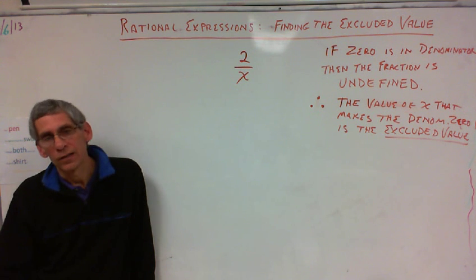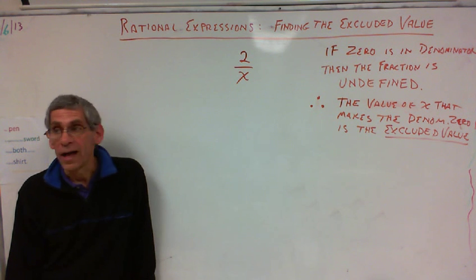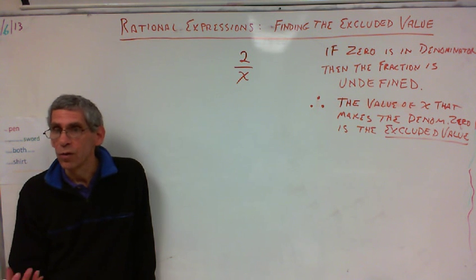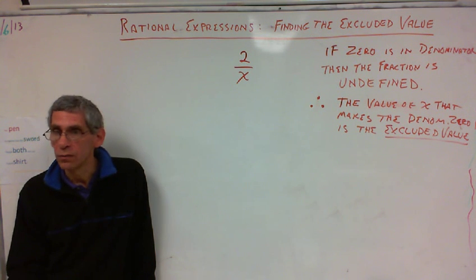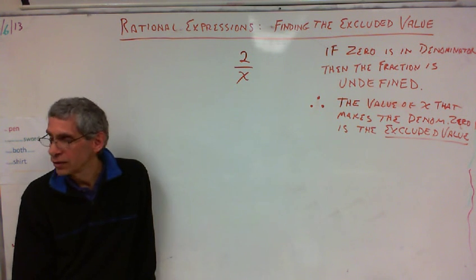Write that. If zero is in the denominator, then the fraction is undefined. The value of X that makes the denominator zero is the excluded value. It might not be X. It could be Y. It could be Z. It could be ABC. It could be lots of variables. But if one of those is a zero, makes the whole value zero, then that is the excluded value.